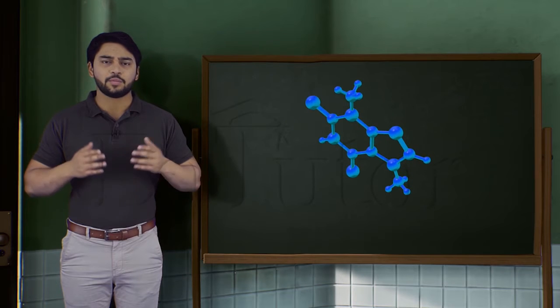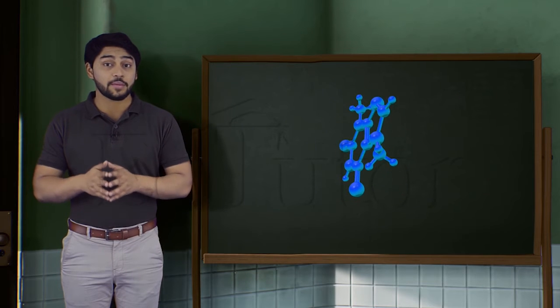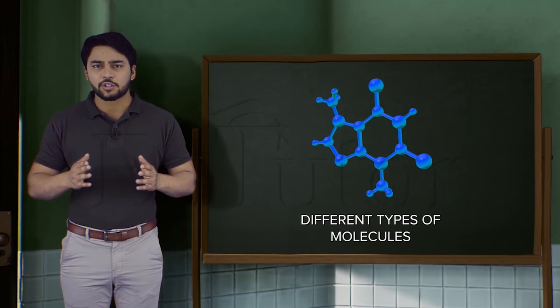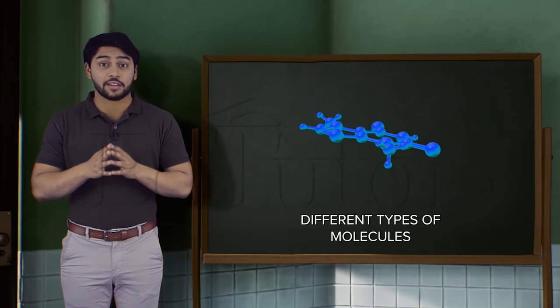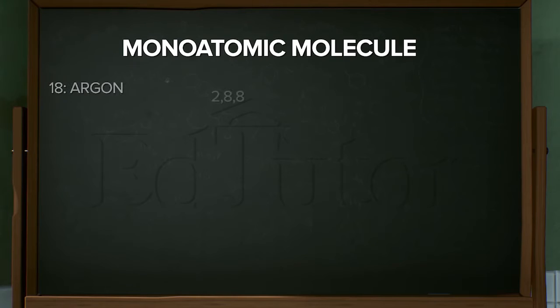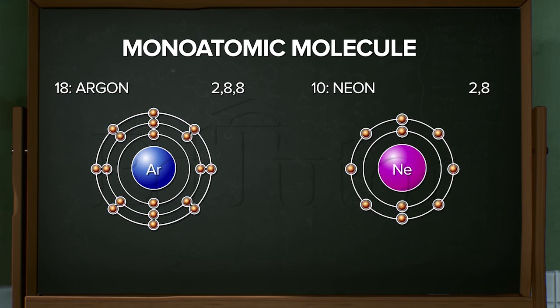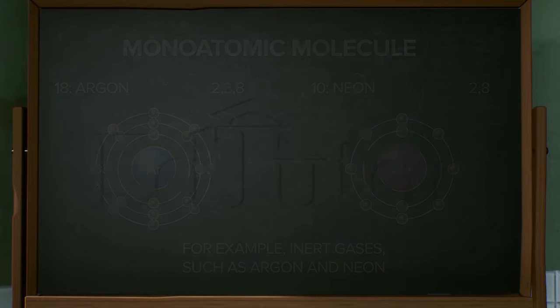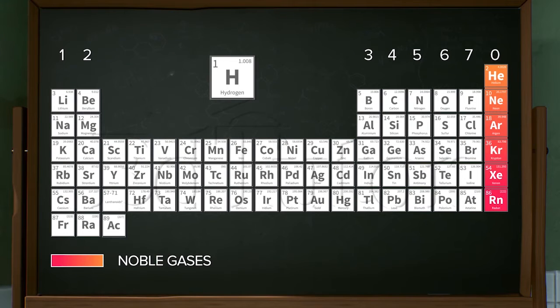We know that the properties of molecules are the same as those of compounds or elements. Now let's talk about molecules and their types. If a molecule has only one atom present, then it is called a monatomic molecule. For example, inert gases such as argon and neon.